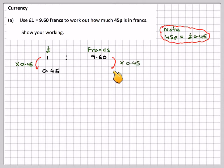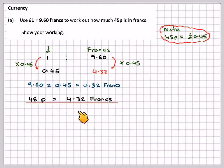So we need to do 9.6 times 0.45, which gives me 4.32 francs. So 45 pence is equal to 4.32 francs at this particular exchange rate.